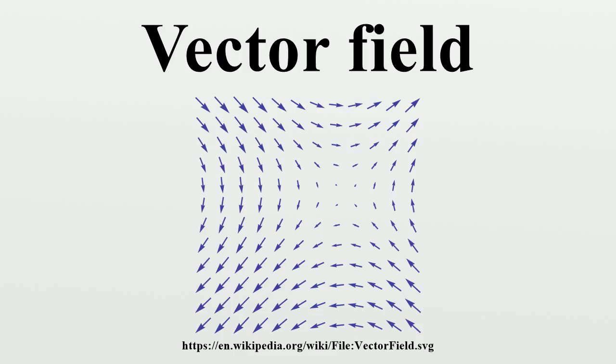Complete vector fields: A vector field is complete if its flow curves exist for all time. In particular, compactly supported vector fields on a manifold are complete. If X is a complete vector field on M, then the one-parameter group of diffeomorphisms generated by the flow along X exists for all time.